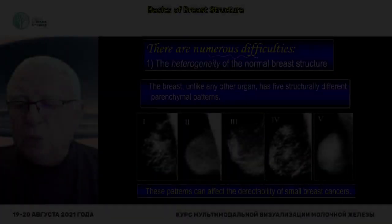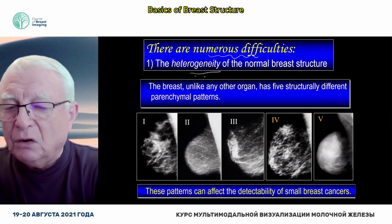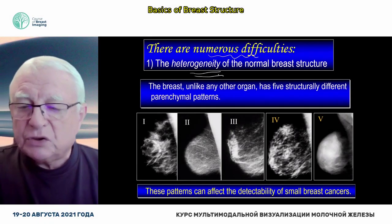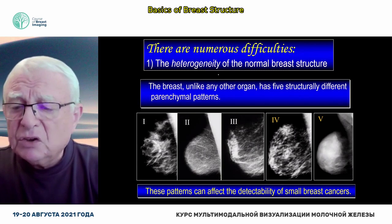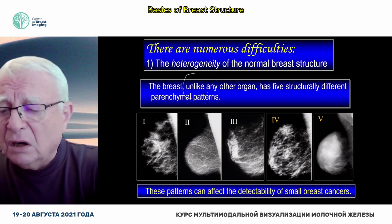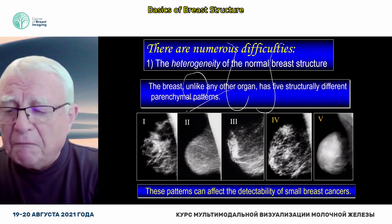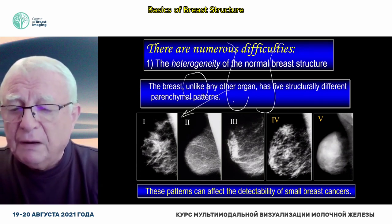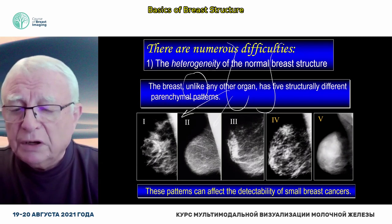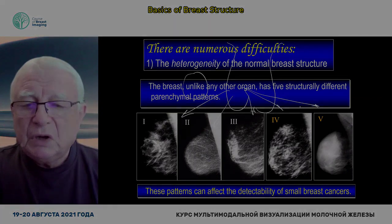Today we only have time to talk about the heterogeneity of the normal breast structure. Isn't it interesting that unlike any other organs, the breasts have five structurally normal, structurally different parenchymal patterns.